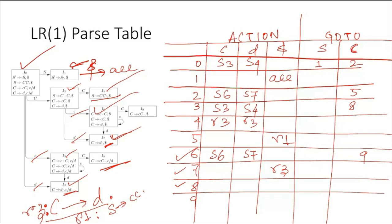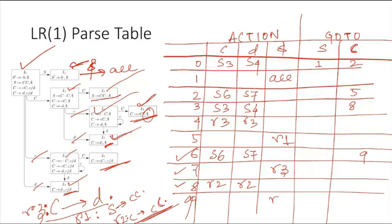At state I8 we have the reduction C → CC dot, which is rule number two — R2. The look-ahead positions are c and d, so we write R2 in both those columns. At state I9, the same R2 applies, but the look-ahead is dollar, so R2 is placed in the dollar column. That completes the parse table for the given grammar.